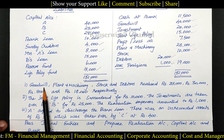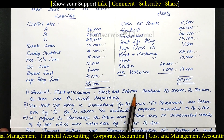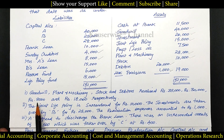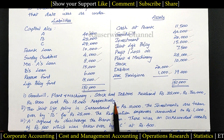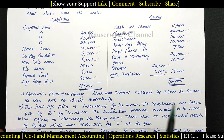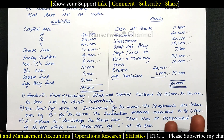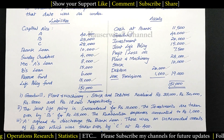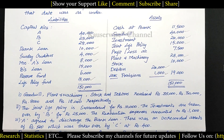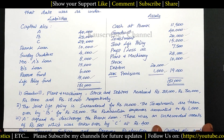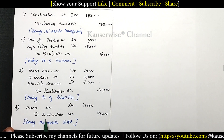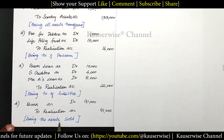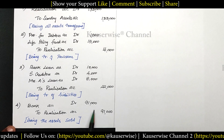Now check the adjustments. First adjustment: goodwill, plant and machinery, stock and debtors were realized for cash — rupees 35,000, 30,000, 8,000 and 18,000 respectively. When we realize any assets for cash, cash comes in, so the banker is the receiver. Entry: Bank Account Dr. to Realization Account — total 91,000 — being assets sold for cash.